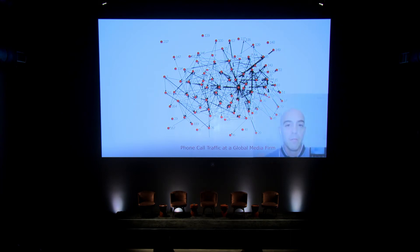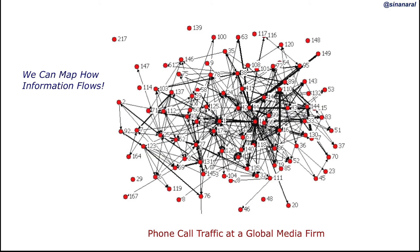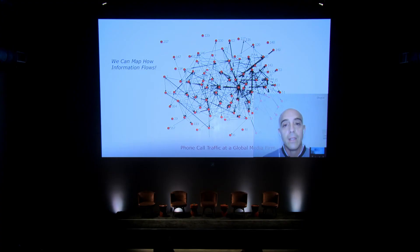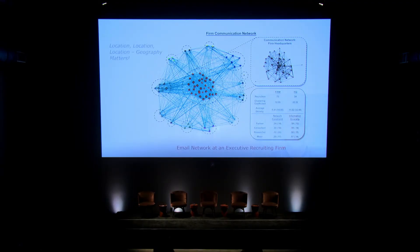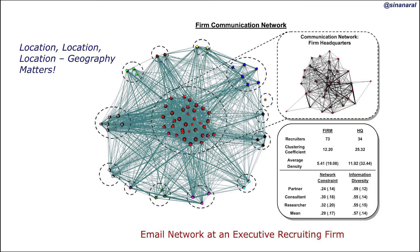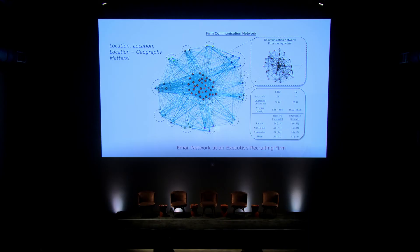We can actually map information flows. This slide shows phone call traffic at a global media firm — just a small portion — where the thickness of lines indicates communication frequency and the direction indicates who is calling whom. Analyzing call log networks shows exactly how information flows. Another example is an email network at an executive recruiting firm, where location matters greatly: a central office with multiple satellite offices, and communication is very much guided by geography as well as information needs.